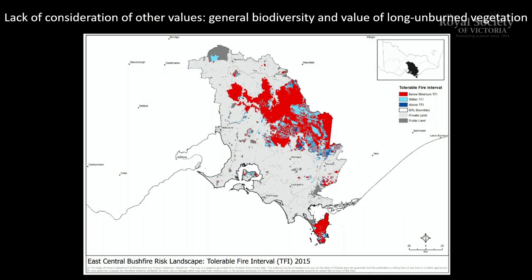In terms of biodiversity values, if we look at how many areas are long unburnt in different parts of Victoria and look at tolerable fire intervals — this is the minimum time it would take for a plant to reproduce itself, to produce seed — a lot of that image is red, meaning it's below the minimum tolerable fire interval. So another fire in that area within that time would cause many species not to be able to regenerate.